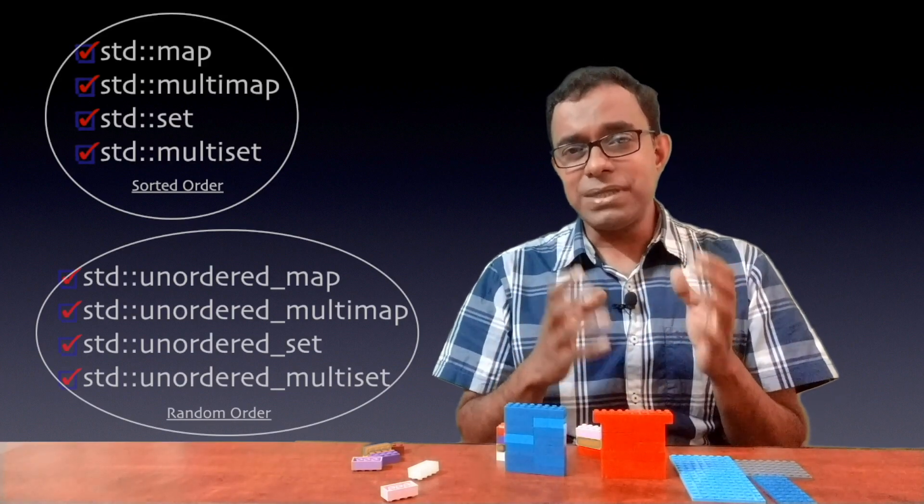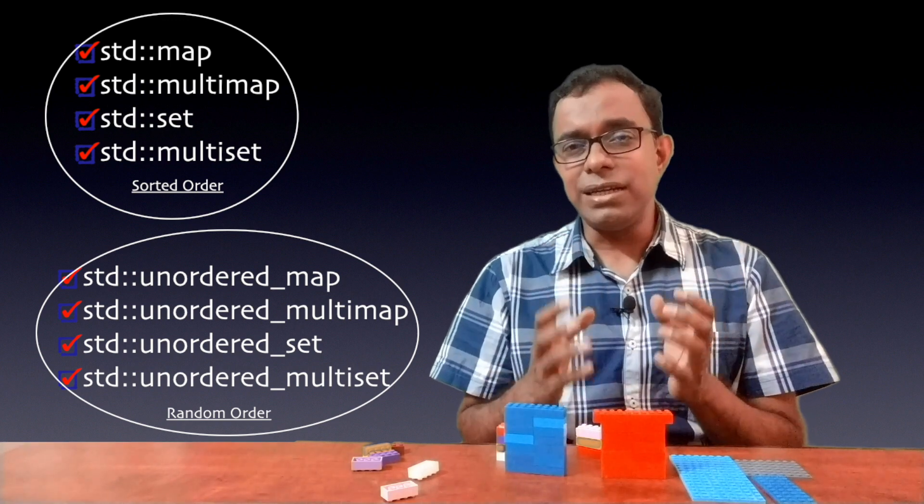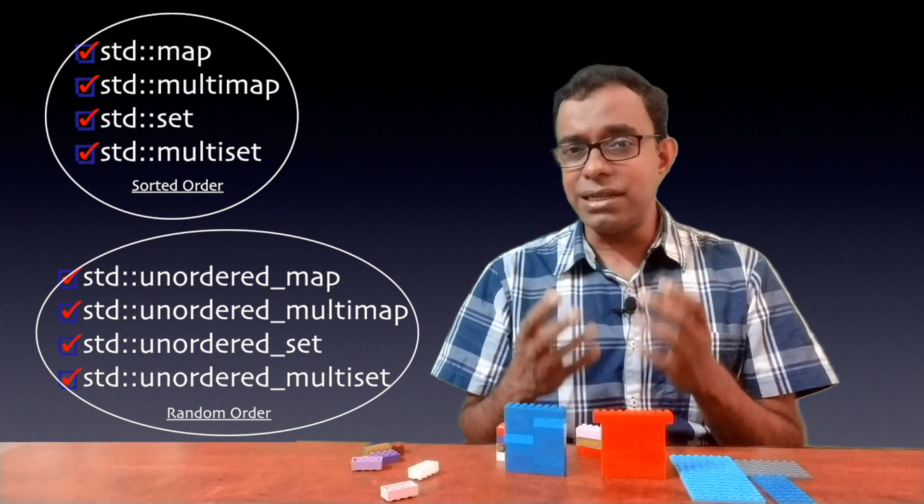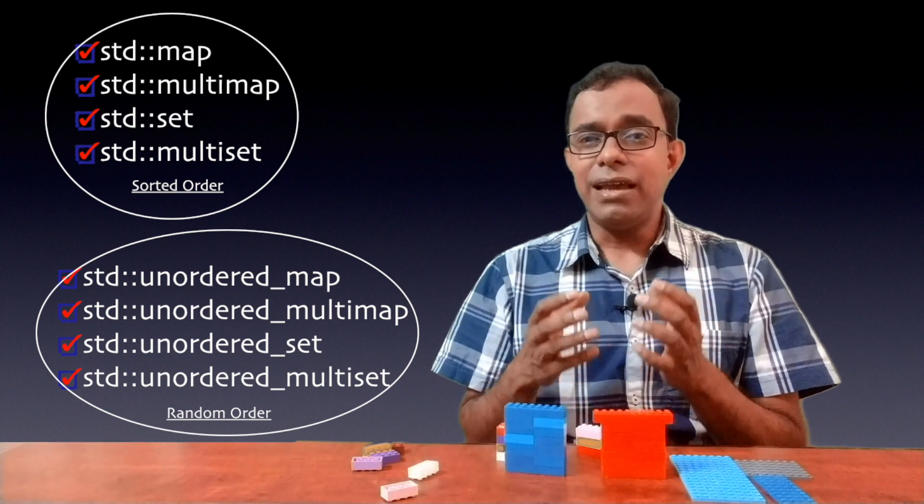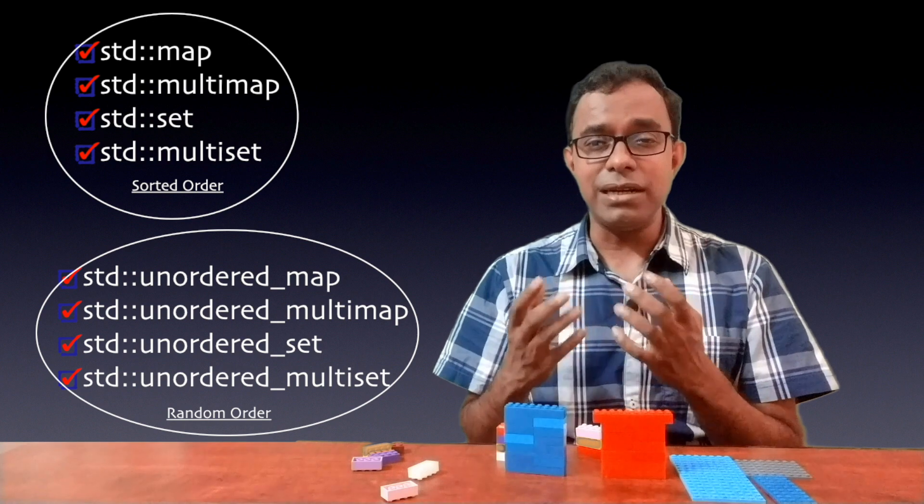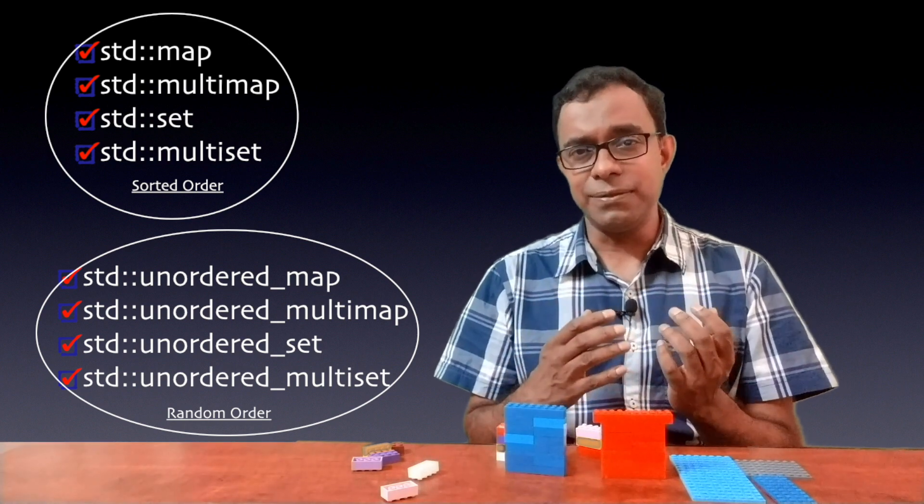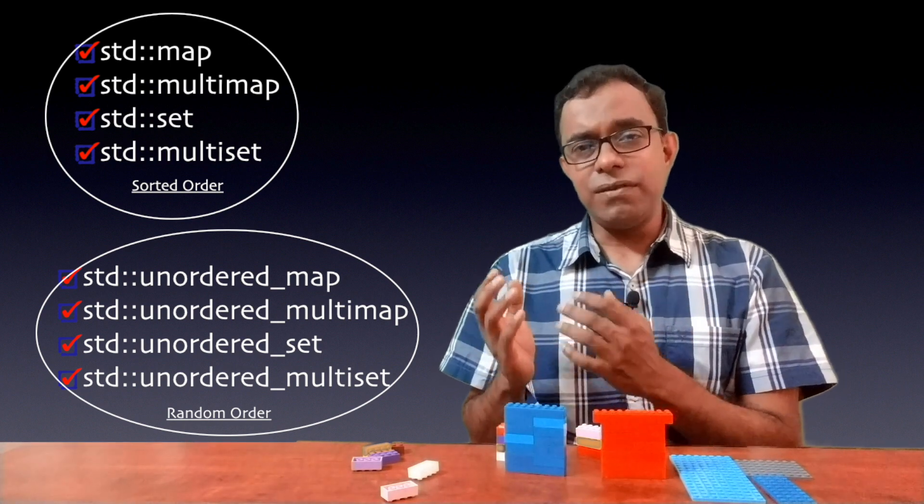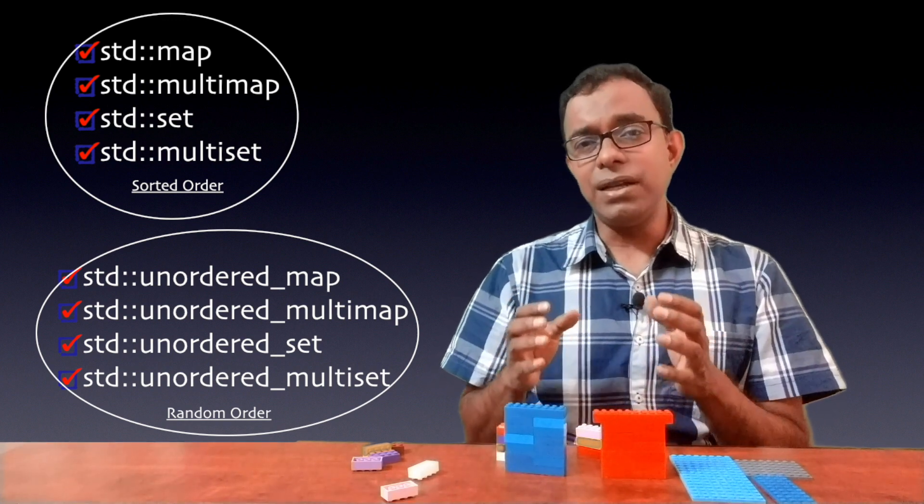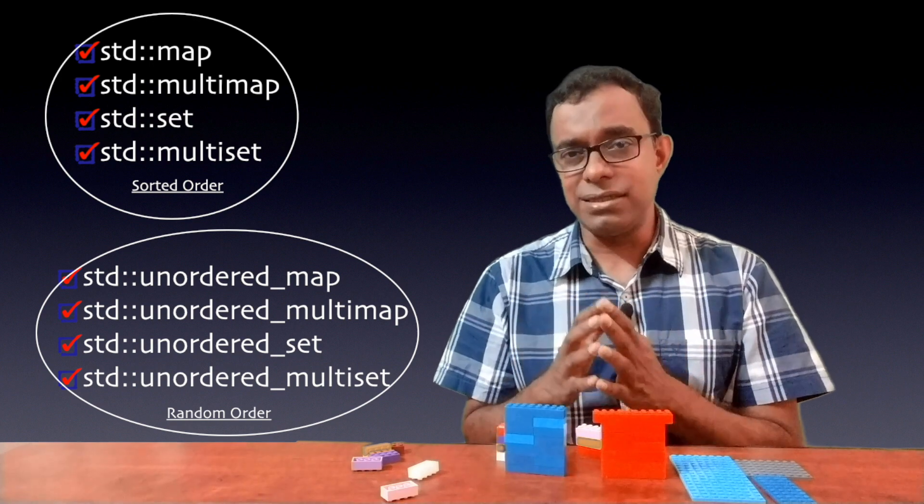Map, multimap, set and multiset are storing data in a way where it is easy to retrieve the data. That means the data is stored in a sorted way and they use variations of binary search tree, predominantly red-black trees to store the data. While the unordered version stores the data as a hash table. That's the difference between unordered and normal map and sets.